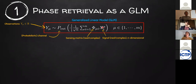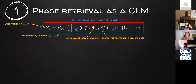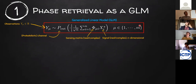You observe y_mu, which is generated via a noisy observation of the matrix-vector product of a sensing matrix and the signal x. So you have your signal, you multiply it by a random sensing matrix, it goes through a probabilistic observation channel, and that's what you observe when trying to infer the vector x-star. In our setup we have n dimensions for the signal and m observations.